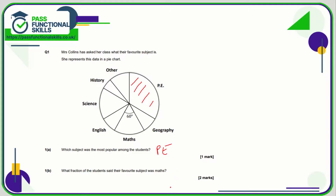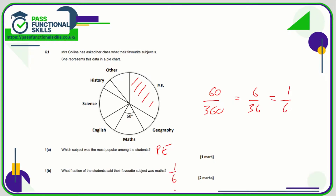What fraction said maths was their favorite? We've been told that maths is 60 degrees. The full circle is 360, so that's 60 out of 360. We can simplify that fraction by dividing both numbers by 10 to get 6 out of 36, and since both are in the 6 times table, divide top and bottom by 6: 1 over 6. So 1/6 said their favorite subject was maths.